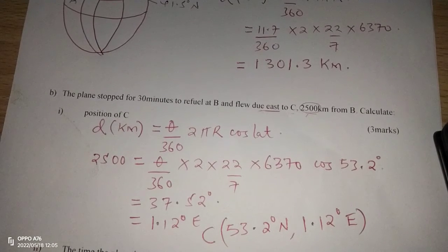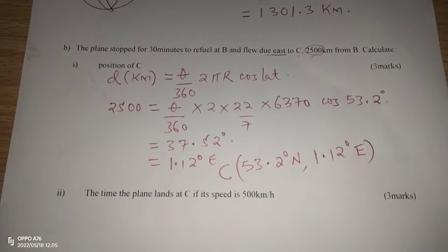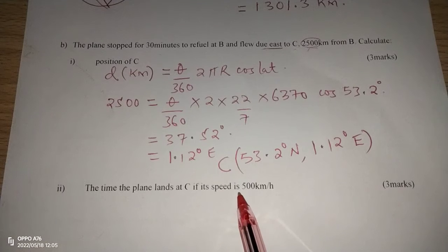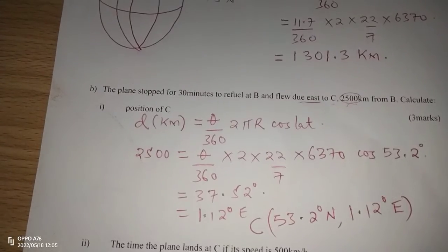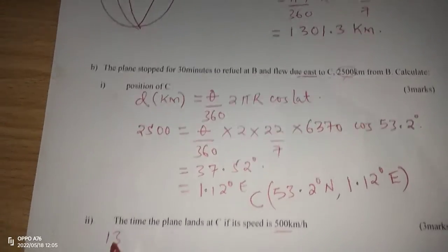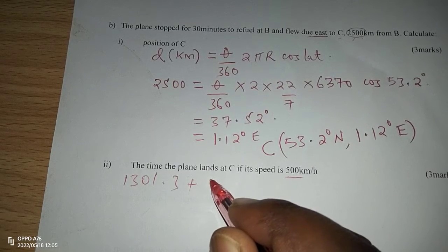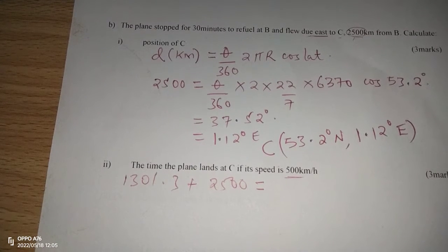So this will be the coordinates of place C where the plane finally lands. Then, the last part, we are finding the time the plane lands at C if its speed is 500 kilometers per hour. We can first of all get the total distance. Total distance will be 1301.3 plus 2500, which gives us 3801.3.